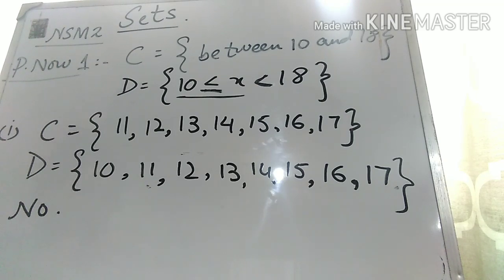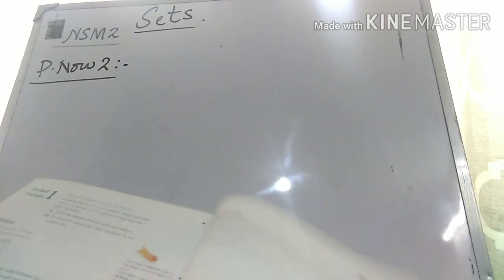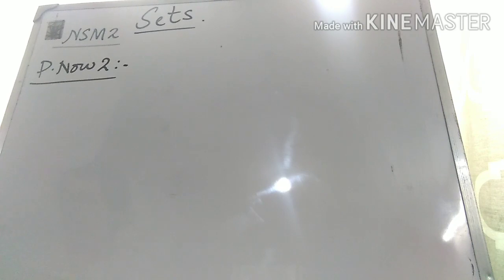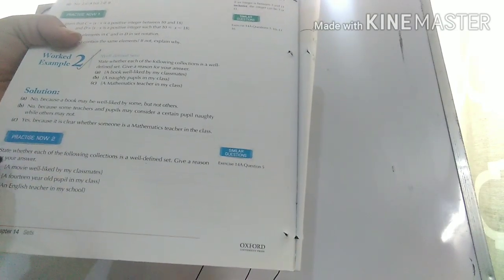Now let's come to Practice Now 2, which is on the same page — page 66 in the new book and page 395 in the old book. In Practice Now 2, the question is: state whether each of the following collections is a well-defined set and give a reason for your answer.